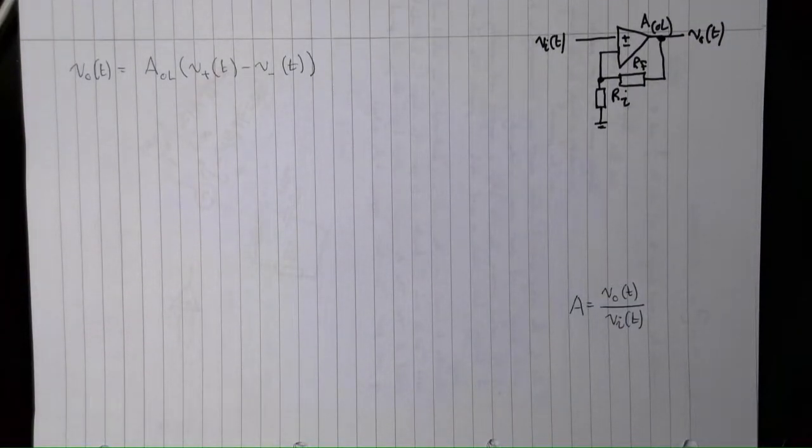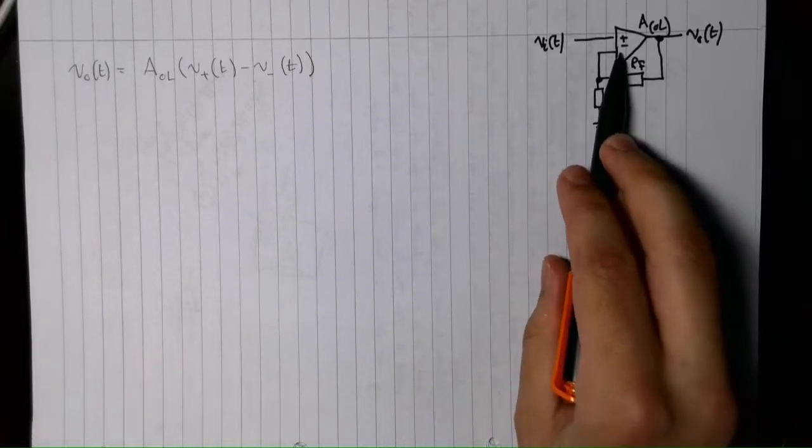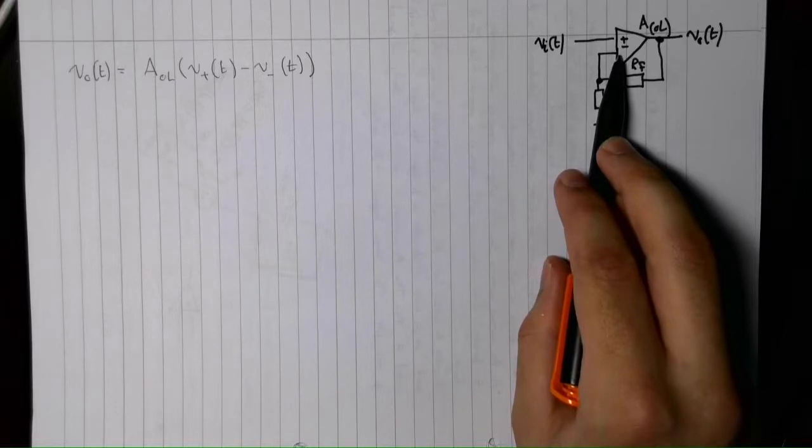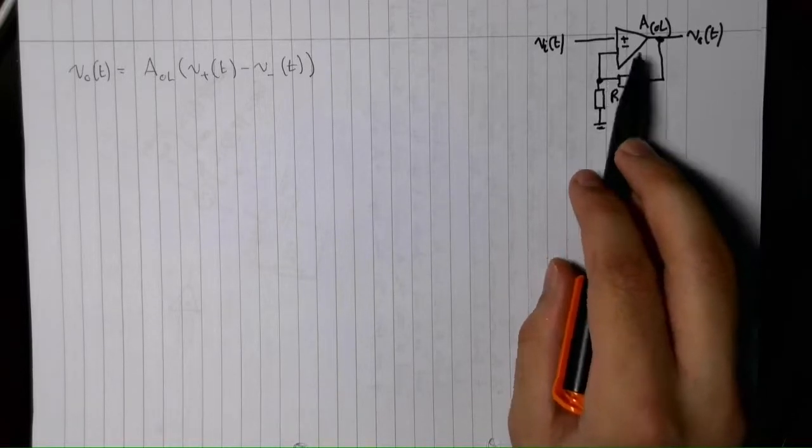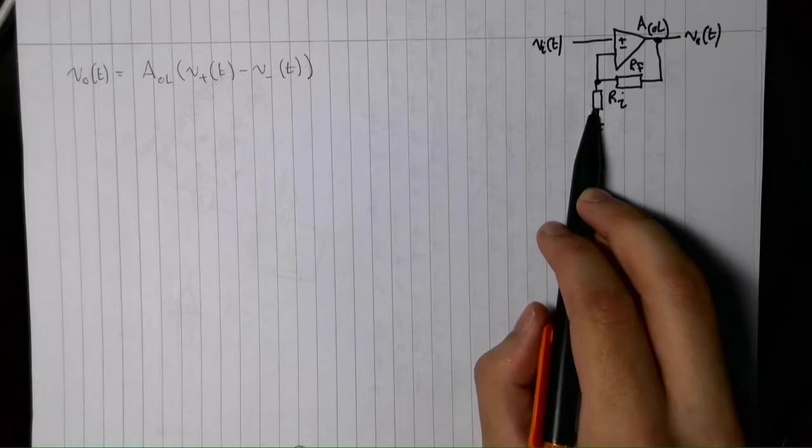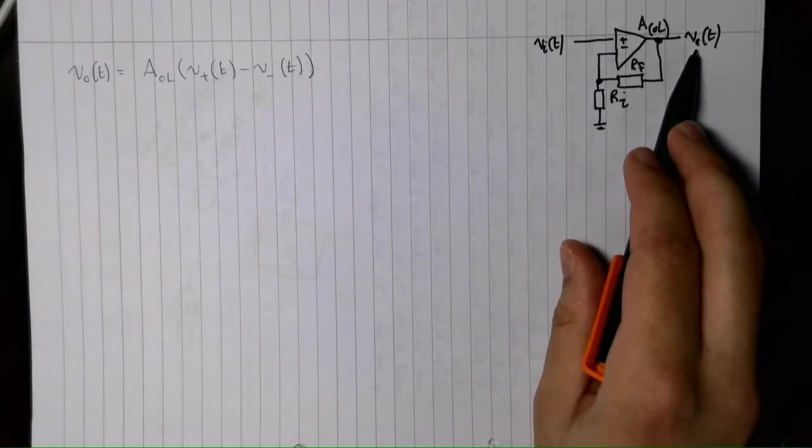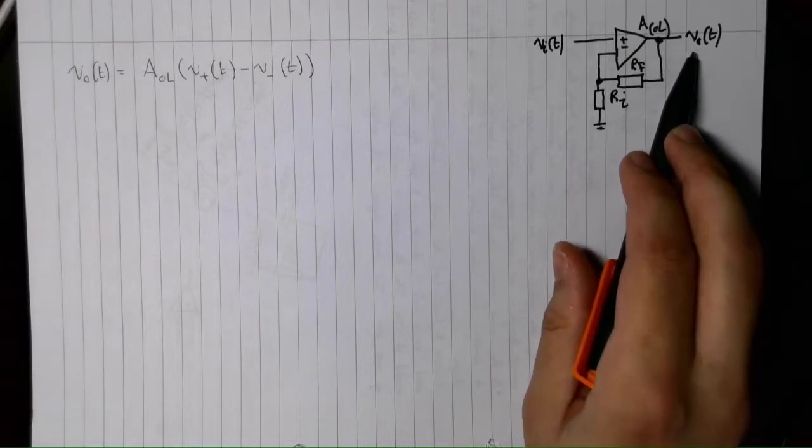Now let's notice something about the inverting input. As no current is flowing into this input, the voltage here is the direct result of the voltage divider formed by Rf and Ri. So, from the output voltage, we can scale using the standard resistor divider equation Ri on Rf plus Ri in this case.